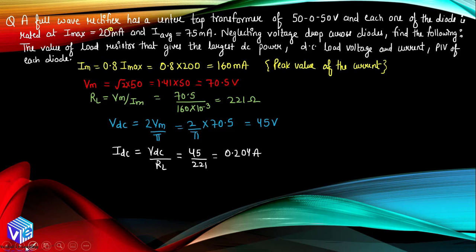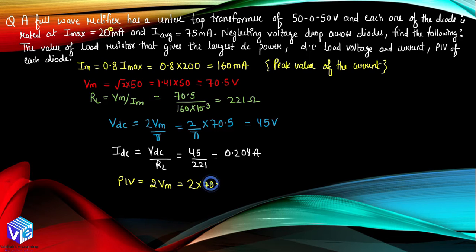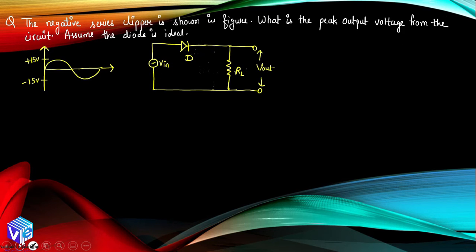Now moving on to the peak inverse voltage. PIV equals 2 into Vm. Putting the value: 2 into 70.5 equals 143 volt. So we have calculated all the parameters that were asked in the question.